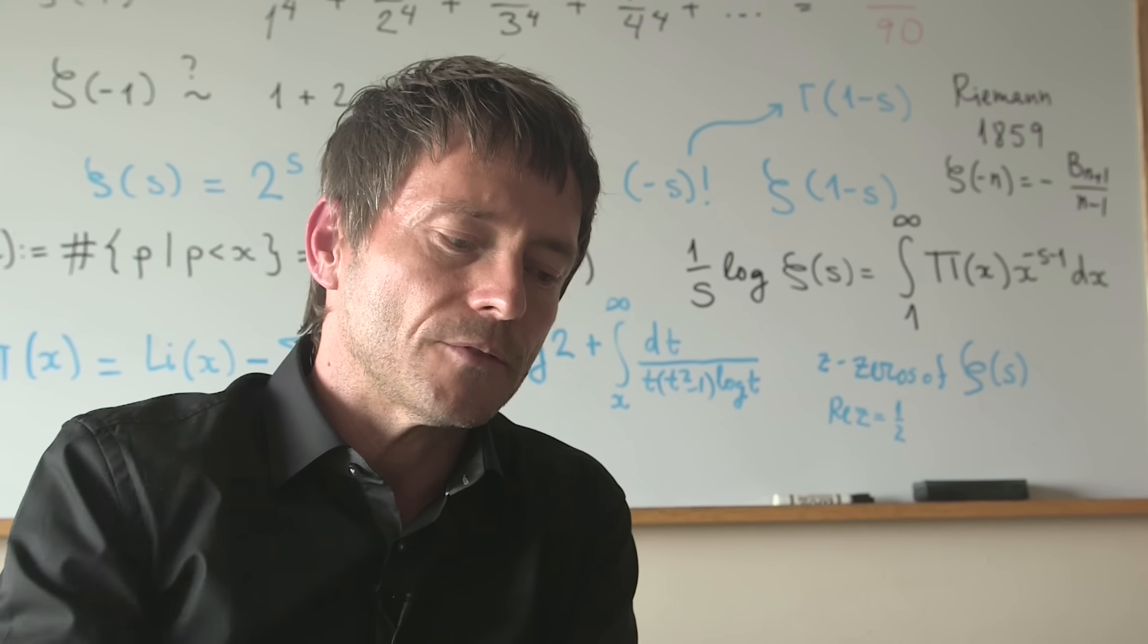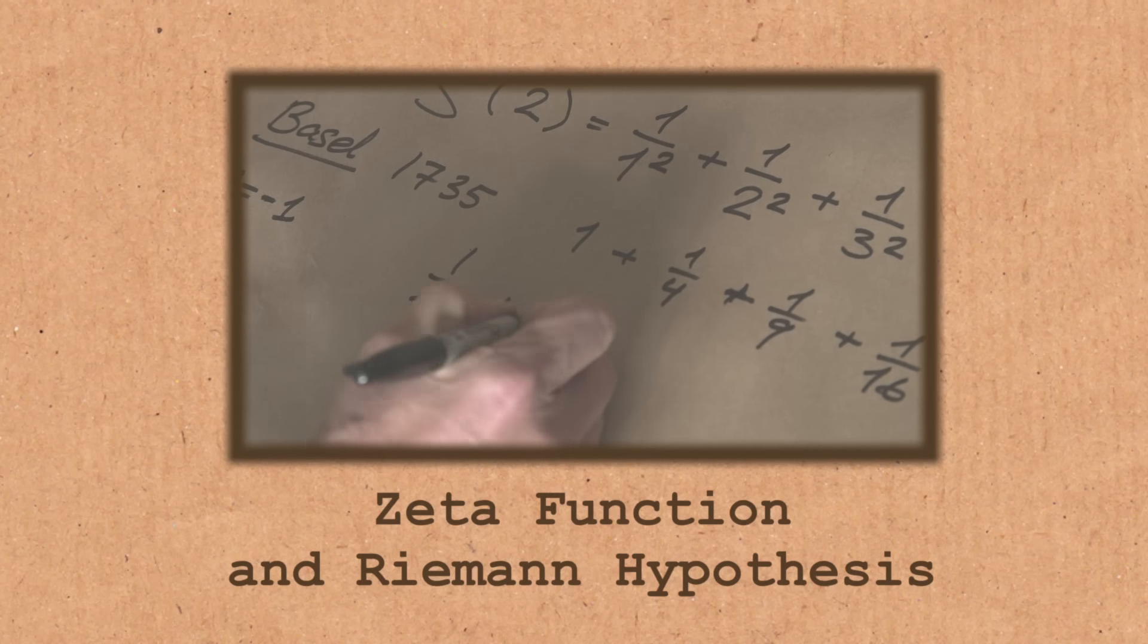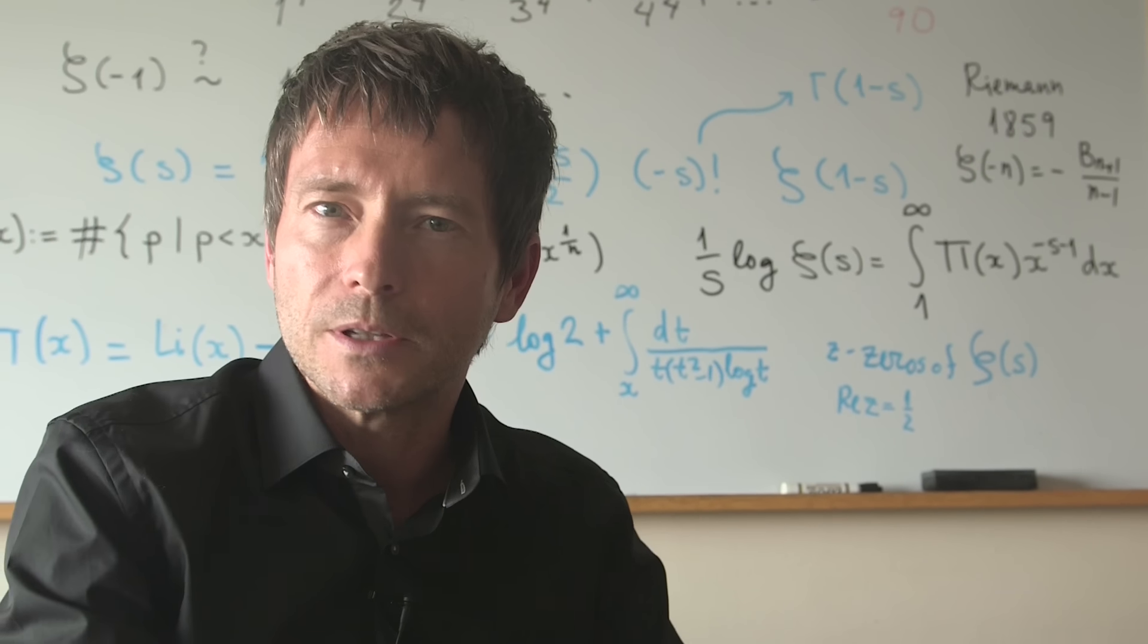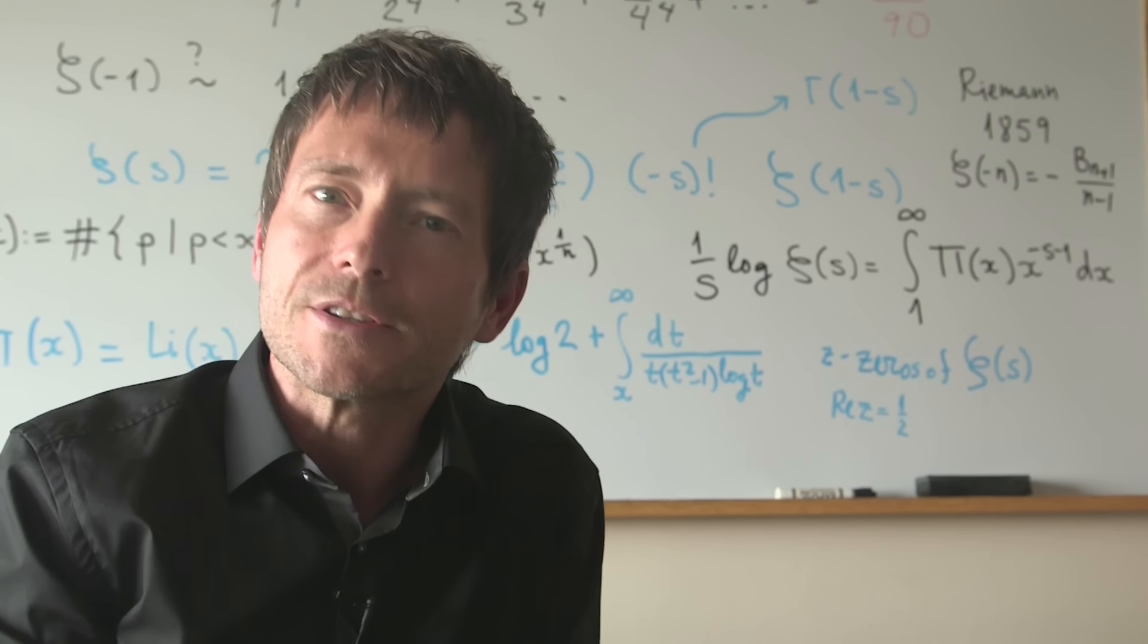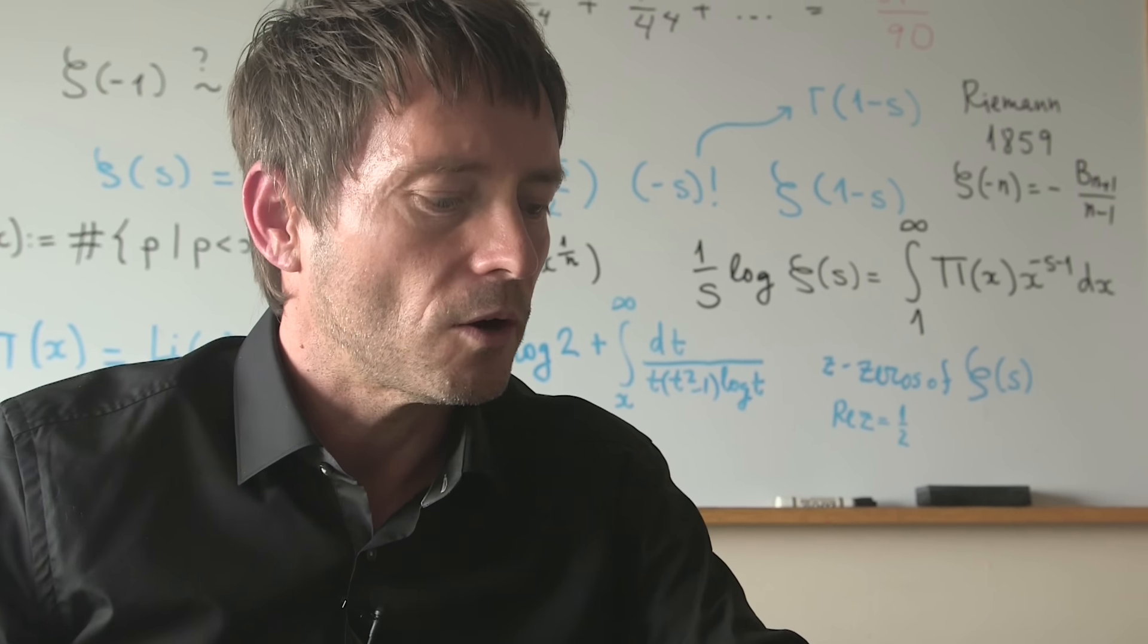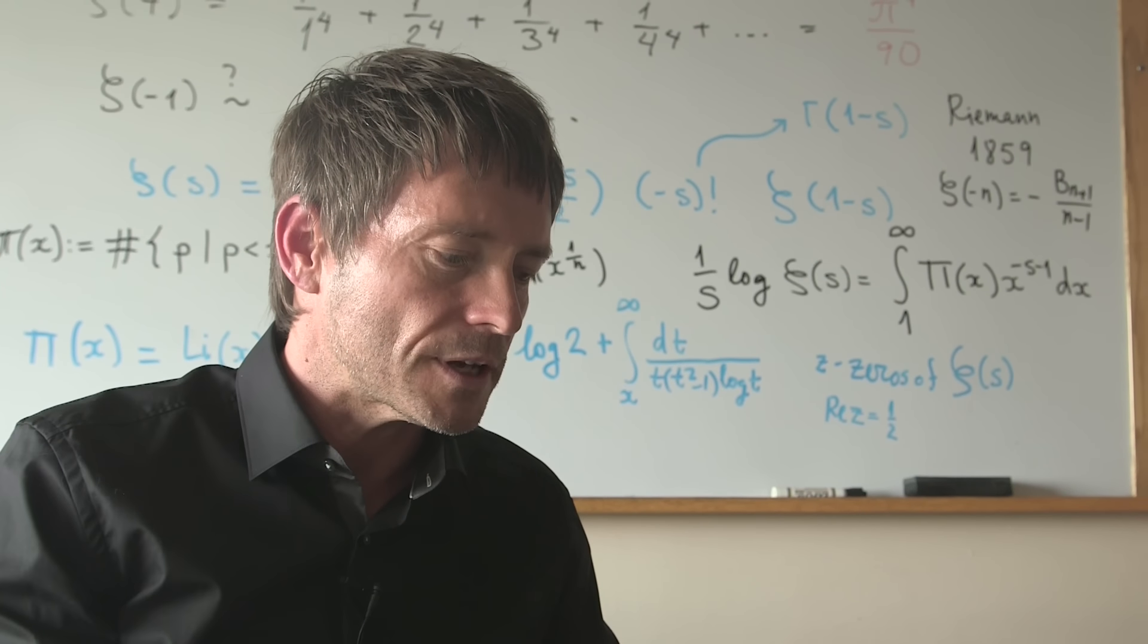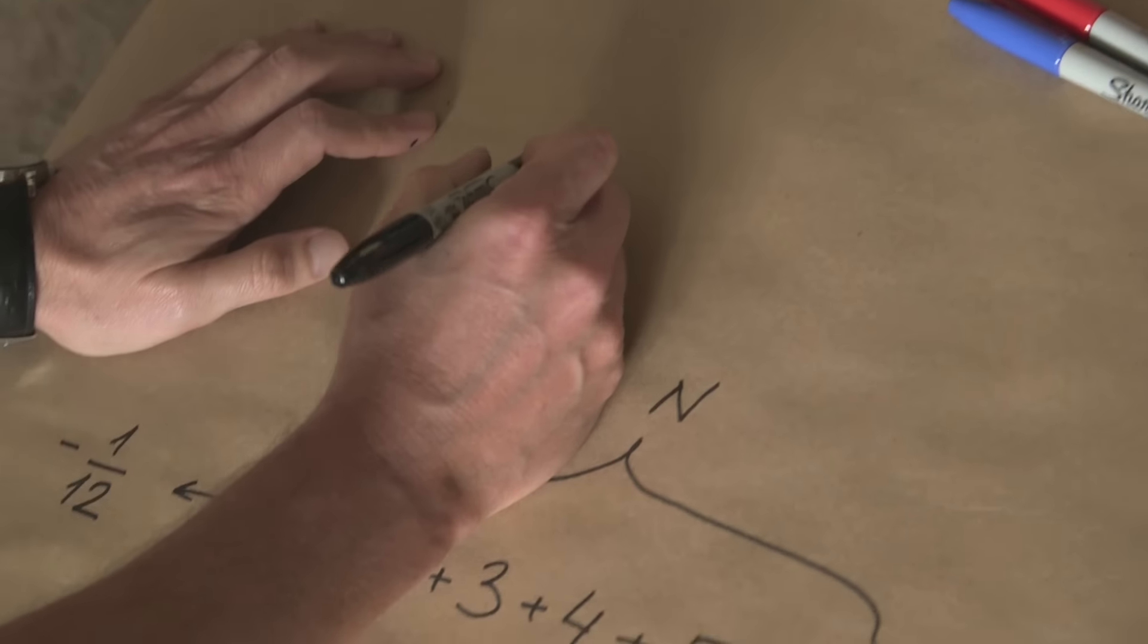So Euler got to minus 1 over 12 in a particular way. Riemann explained later, gave a rigorous theory using his zeta function, a theory which involved things like complex numbers. So something which was not yet fully developed at the time of Euler, although a lot of this already existed, and Euler himself was considering complex numbers. But also there are other ways. We now know other possible ways of thinking of how to isolate this finite part in this infinite series.